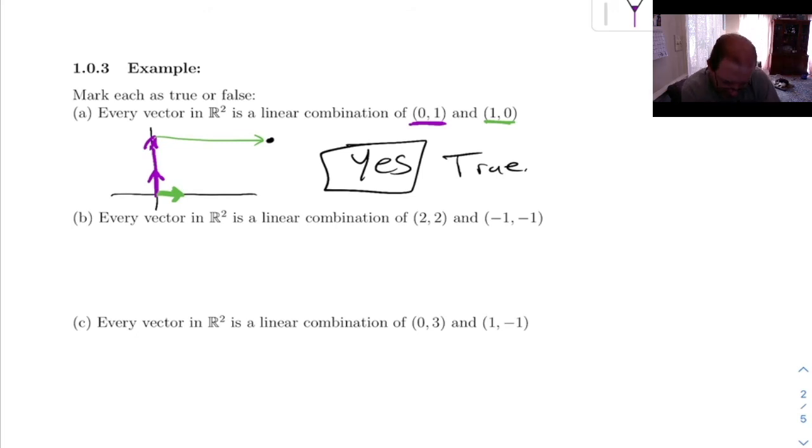The next one says, every vector in R2 is a linear combination of (2, 2) and (-1, -1). Let's do the same thing. If I draw in (2, 2) and (-1, -1), (2, 2) points up here, and (-1, -1) points down here. Now, those two lie on the same line. So if you think about what you can get by taking linear combinations of these guys, all you're going to get is stuff that lies on this line here. So you can get anything on that line, but you can't get anything else. So is every vector a linear combination of those? No. So this is false.